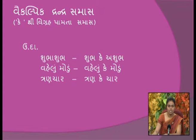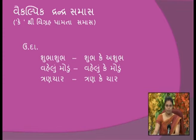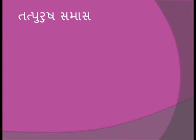ઇતરેતર દ્વંદ્વ સમાસ 'અને' થી વિગ્રહ પામે. ઉદાહરણ: શુભ-અશુભ (શુભ કે અશુભ), વહેલું-માળું (વહેલું કે માળું), ત્રણ-ચાર (ત્રણ કે ચાર). 'ને' અથવા 'કે' થી વિગ્રહ પામતા અને સમાન મહત્વ ધરાવતા આ સમાસને ત્રૂણ સમાસ તરીકે ઓળખવામાં આવે છે. હવે આપણે એકપદ પ્રધાન સમાસ જોઈએ.